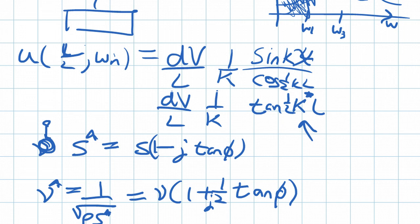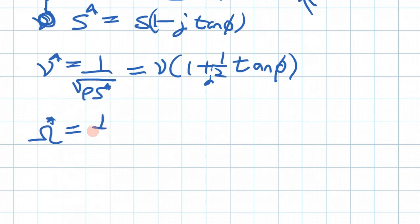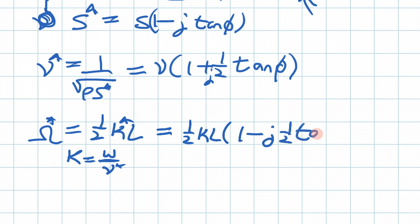Then as I said, we define this term which is also complex, and we're going to say that is equal to one half K times L. This is also complex, and K was equal to omega divided by sound velocity. When you put something underneath, this ends up changing the sign of the complex value. So we'll actually end up getting one half K L, one minus j one half tangent theta.